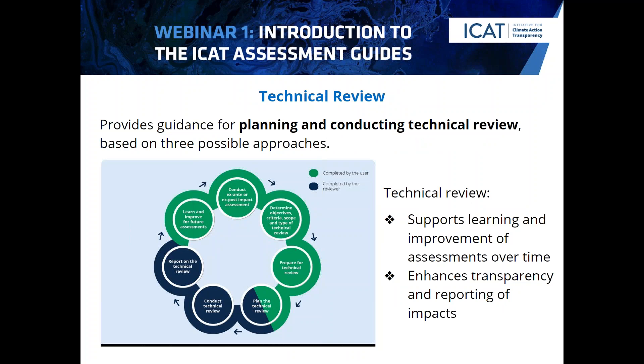The second process guide is technical review. As David mentioned earlier, this guide provides guidance for planning and conducting technical review based on three possible approaches: first, second, and third-party review. Third-party review represents the highest level of rigor and independence. The other approaches can also be used to help improve your assessment over time. Key benefits of technical review are that it supports learning and improvement of assessments over time, and it enhances the transparency and reporting of impacts.